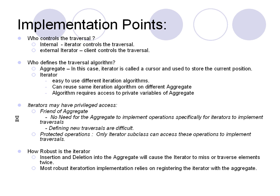There are some points to consider while implementing an iterator. One is: who controls the traversal — the client or the iterator? We can implement traversal algorithms either in the client itself or in the iterator object. If the client implements all traversal logic, that is called an external iterator. If the entire logic is with the iterator, it's called an internal iterator. When control is with the client, it's easier to traverse and compare two separate lists. But when control is with the iterator, it's easier to use but gives less control in code.